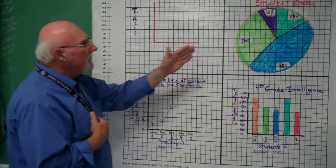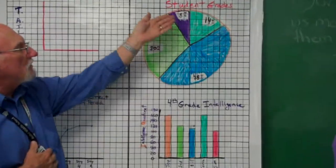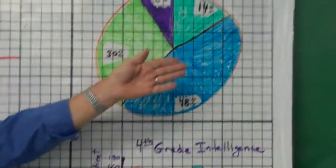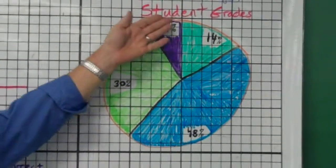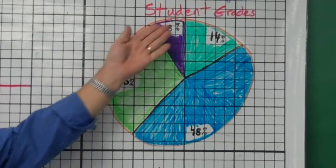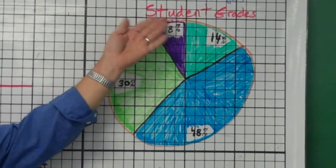So in a pie graph, you're going to show percentages. Here, for instance, I'm talking about student grades. I know it's about student grades because I have a title on there.